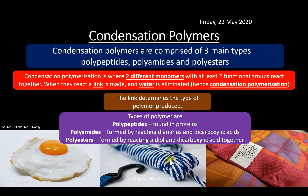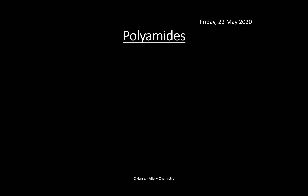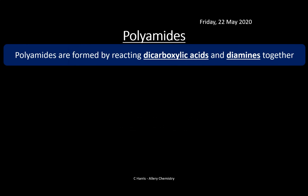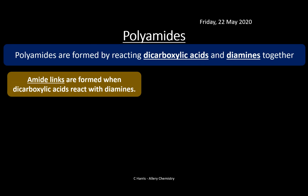Here's an example of a polyamide — used for rope, like builder's rope on a construction site — and a polyester, used in fabrics. Polypeptides are proteins; the white of an egg is pure protein. So that's the polymer we'll look at in the next video. Now let's look at polyamides first. Polyamides are formed by reacting dicarboxylic acids and diamines together, forming an amide link.